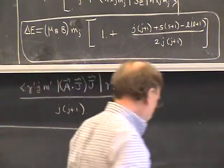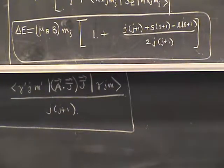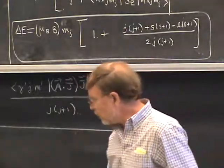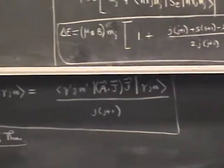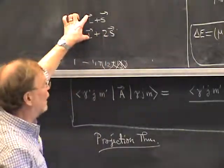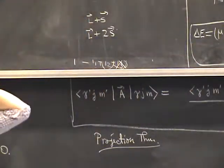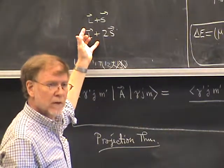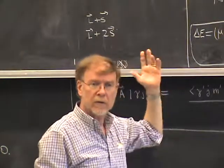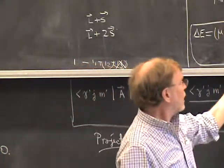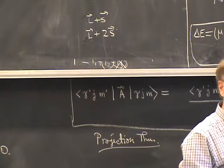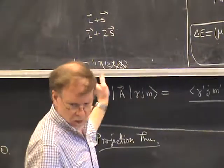It's remarkable that the energy shifts depend only on m_j, given that the magnetic moment couples to the field via L + 2S (not L + S = J). The reason is that when working within a single irreducible subspace of fixed j, all vector operators are proportional to one another — this is a consequence of the Wigner-Eckart theorem. The proportionality factor between L+2S and J has been worked out explicitly using the projection theorem, and that is precisely what the Landé g-factor represents.